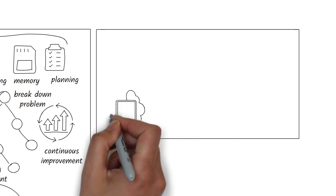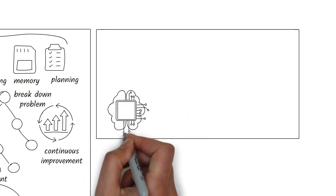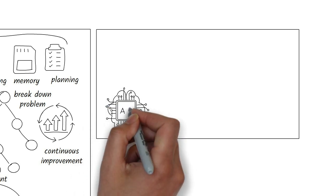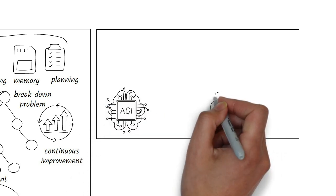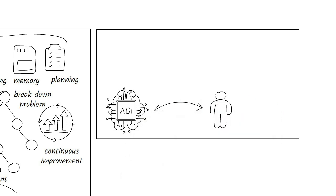And then there's the end game, which is artificial general intelligence, or AGI. Right now, AI is still narrow. It can master one task at a time. The dream of AGI is where AI can think, learn, and reason like a human.